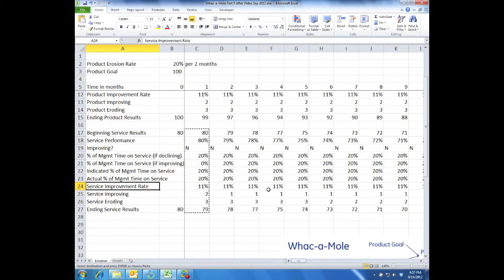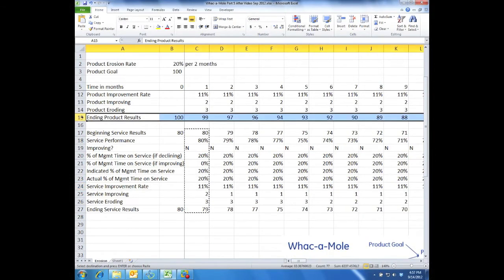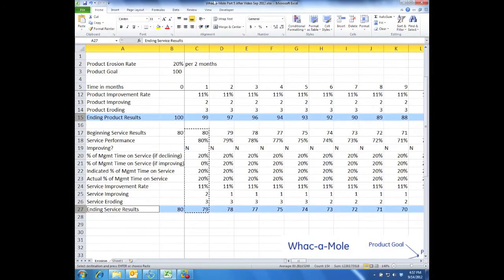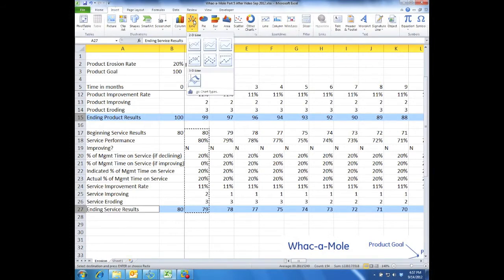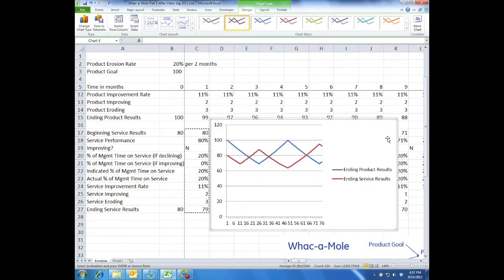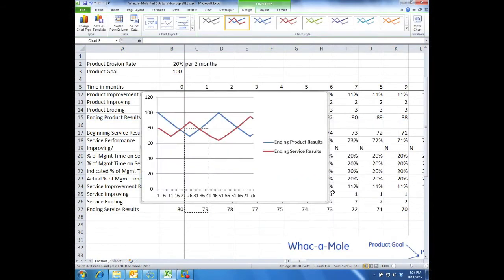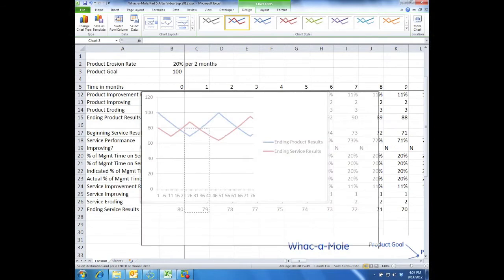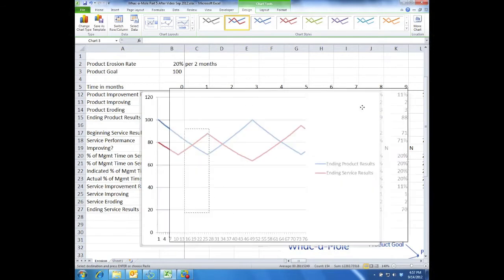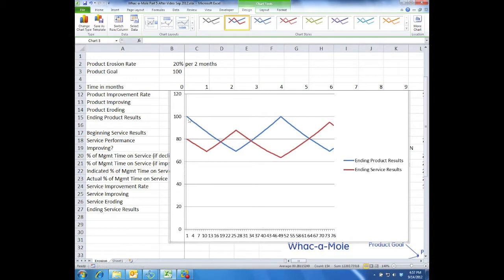Okay, so we have a model. So now we're going to look at ending product results and ending service results. Insert line, there we go. That is what whack-a-mole looks like basically. So if we just step through this, product started at 100, service started at 80. They're both declining because it's not until 70 that you wake up and try and do something about it.